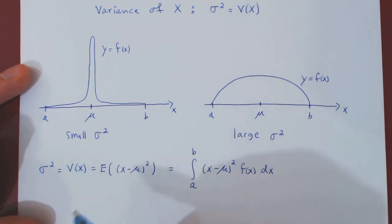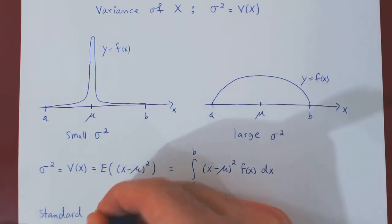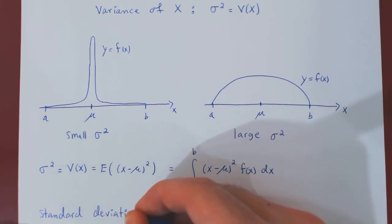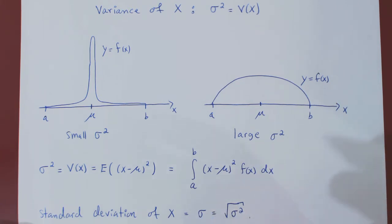there is also what's known as the standard deviation of X, which is simply the square root of the variance. So, once you find the variance, take the square root of the variance, and you obtain the so-called standard deviation, which is denoted by simply sigma.